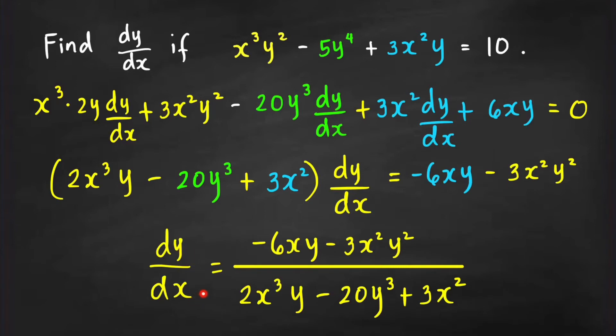The last step is to divide both sides by the coefficient of dy/dx, and we get the answer: the derivative of y with respect to x equals that numerator expression over the denominator. Now let's do this the fast way — the super fast way — probably getting dy/dx in 10 seconds.